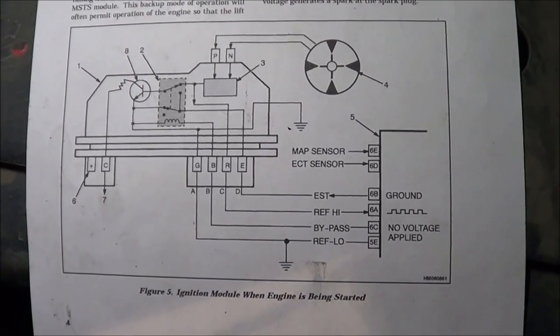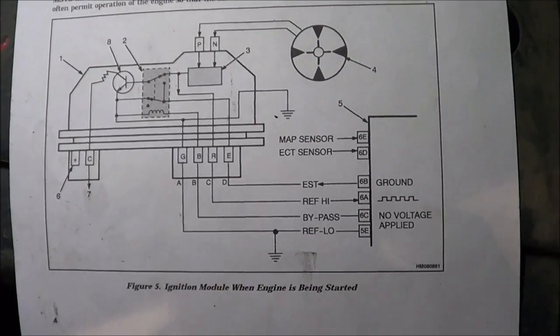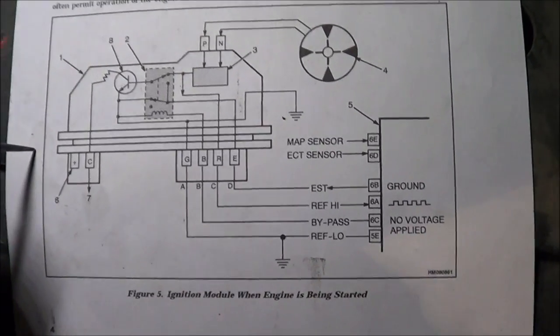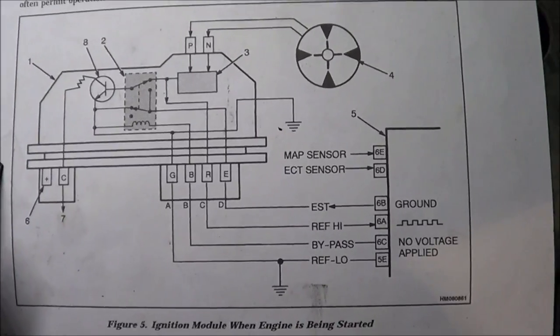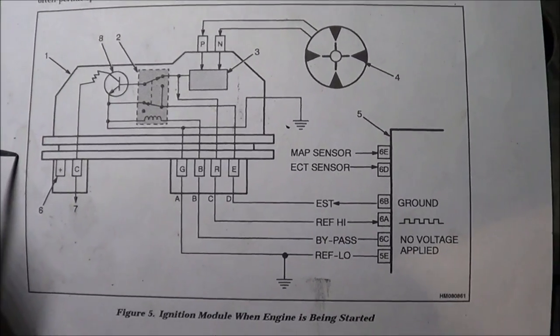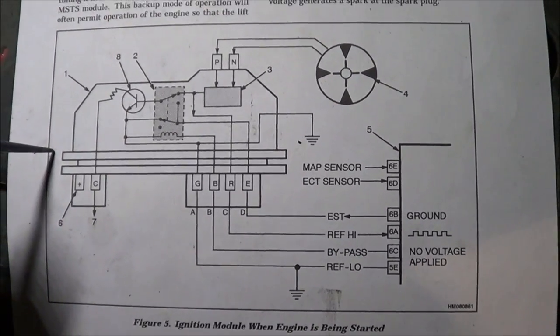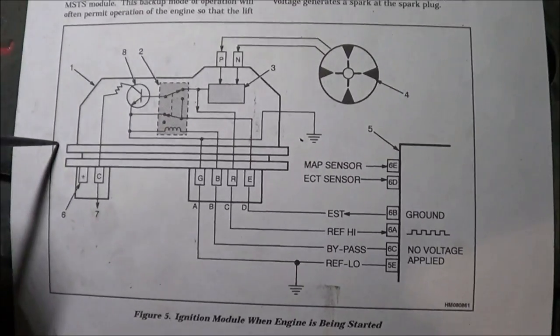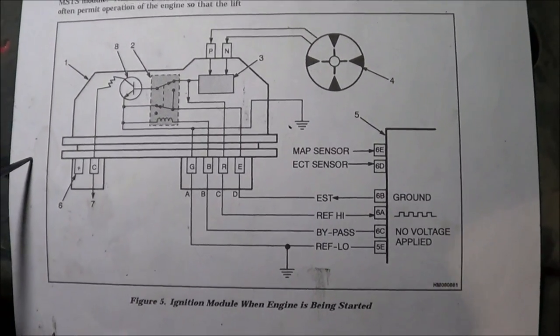So we're not actually going to be solving a problem, but actually looking at a working truck. What I have right here is a diagram of the ignition module that the GM bypass system uses.